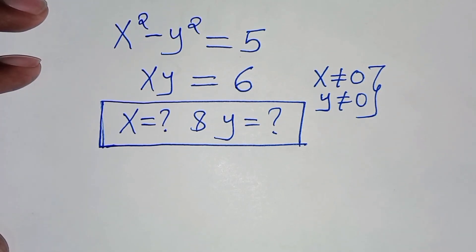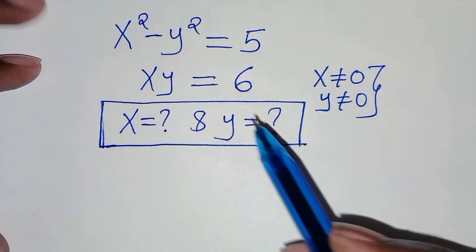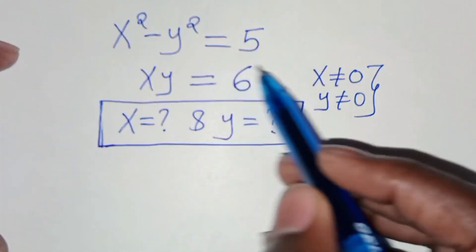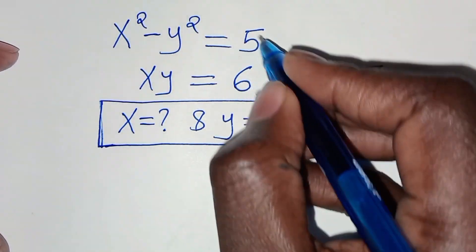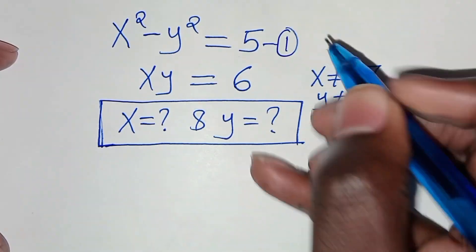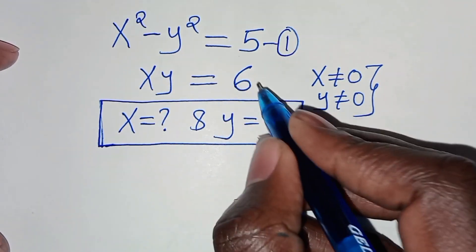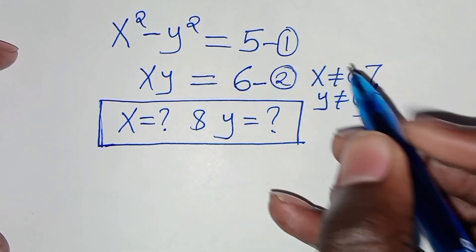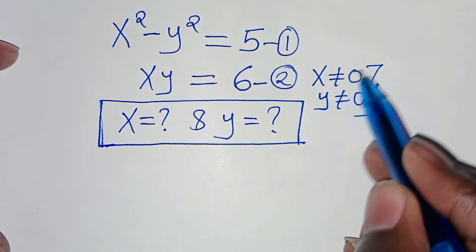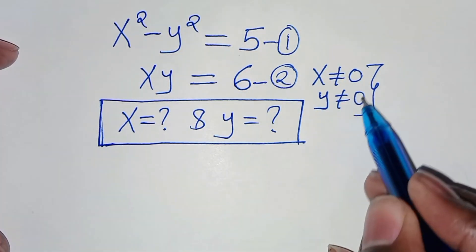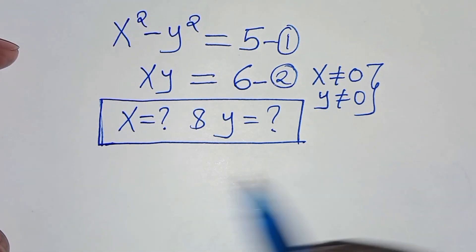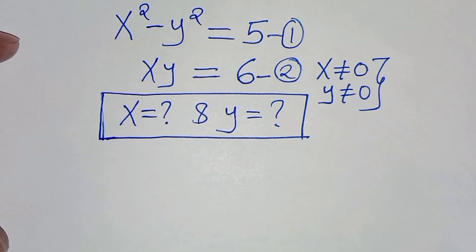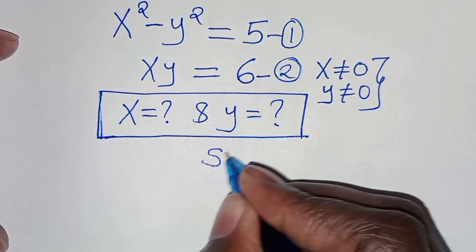Hello everyone, you are welcome to solve this nice algebra problem, which is x squared minus y squared equals 5 — let's call this equation 1 — and x times y equals 6 — let's call this equation 2 — such that x is not equal to 0 and y is not equal to 0. So what is the value of x and what is the value of y? Let's present the solution from here.